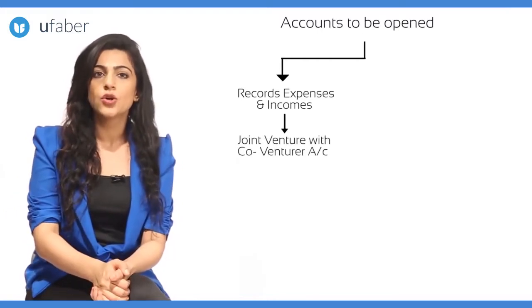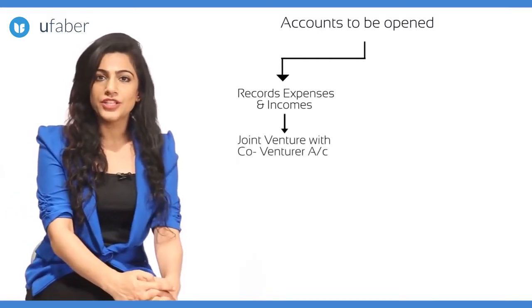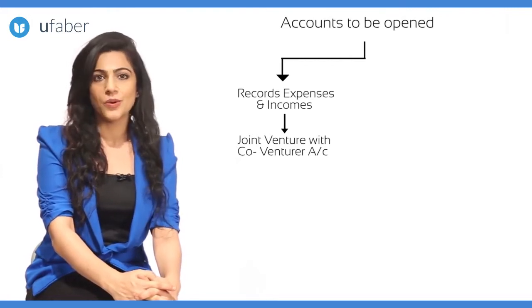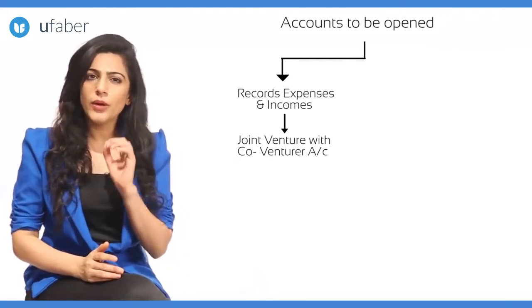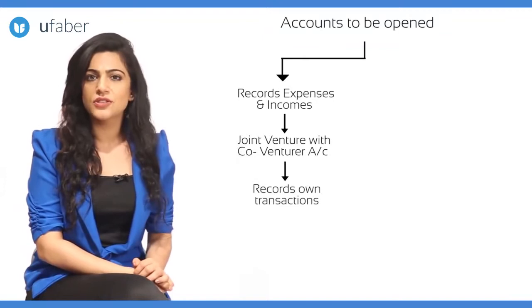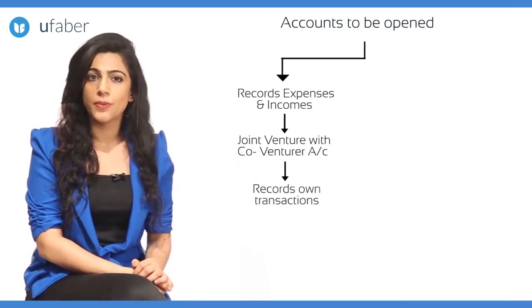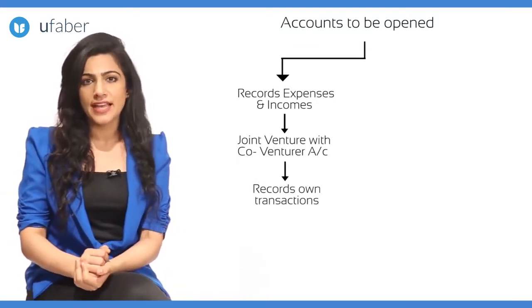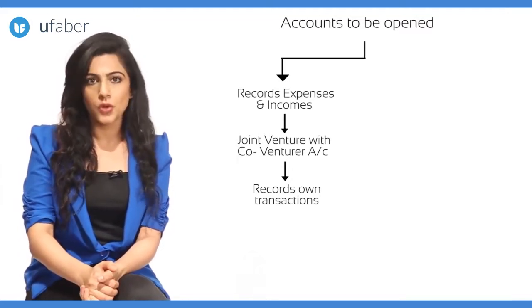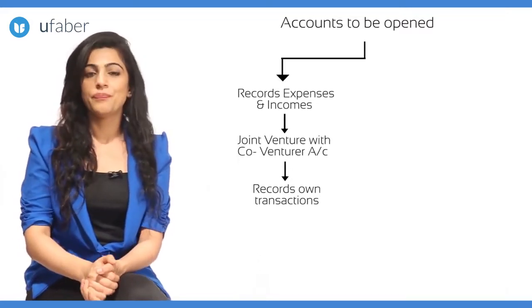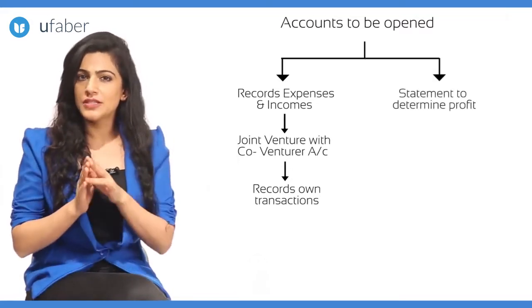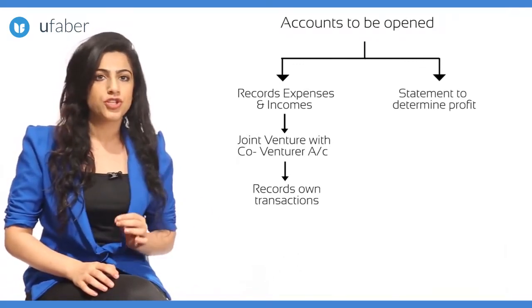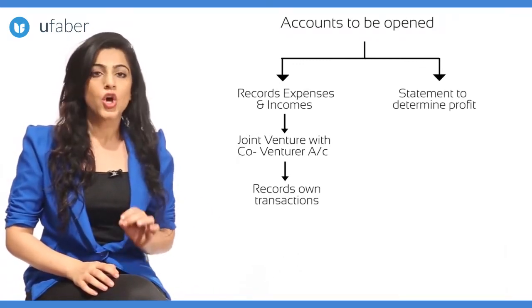It is necessary to open an account where all expenses incurred and materials sent, etc., are debited. This account is called the Joint Venture with Co-venturer Account. The Joint Venture with Co-venturer Account is a personal account, but since we would be recording only the transactions entered into by us, we would not be in a position to accurately calculate the amount of profit or loss.